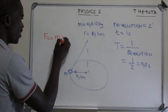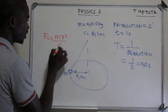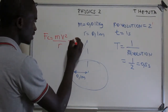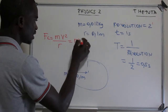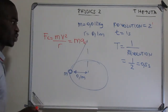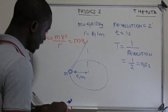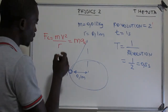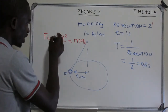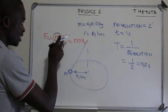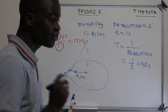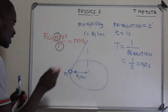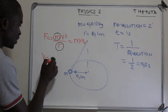To determine the centripetal force, the formula is F = mv²/r, which is the same as mass times centripetal acceleration. Looking at the problem, I need to identify the unknowns. I know the radius and the mass, so those are known. The unknown is the velocity, which means I have to determine the velocity.